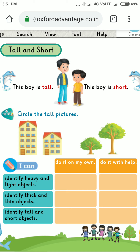Here you can identify heavy and light objects. If you do it on your own, tick the first column. If you observe with someone's help, tick the second column. Identify thick and thin objects — if you identify on your own, tick the first column; if you do it with help, tick the other column. Identify tall and short — if you observe yourself whether something is tall or short, mark it in the 'on my own' column.